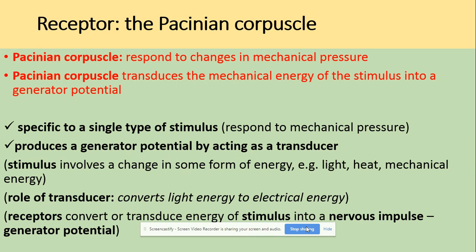In terms of the Pacinian Corpuscle, as mentioned when we were looking at the specification, it's specific because it will respond to changes in mechanical pressure. The Pacinian Corpuscle is a transducer — it transduces the mechanical energy of the stimulus into a generator potential, or in other words, an action potential. So what is a transducer?